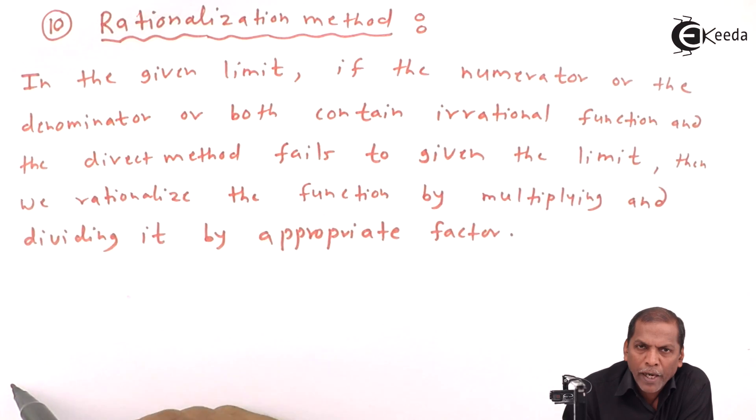So it means when numerator or denominator contain irrational function, then we have to rationalize either numerator or denominator or both to get the answer for the given limit. So this is all about the rationalization method.